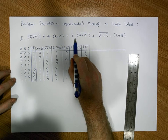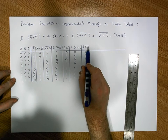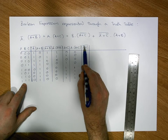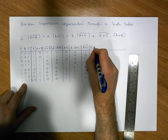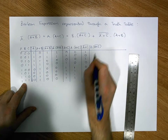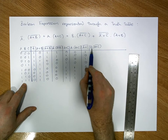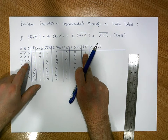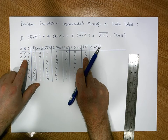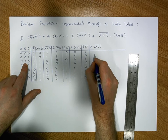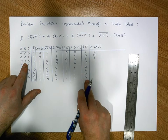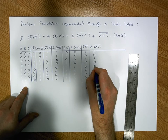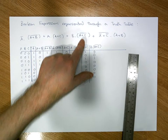Now we can calculate B ANDed with (A OR C)-bar. The B column and the (A OR C)-bar column are ANDed together — an AND only gives a one when both are simultaneously one. Checking the rows, there is a simultaneous one only in the third case. Everything else is zero, so we end up with zero, zero, one, zero, zero, zero, zero, zero. That completes the third term.